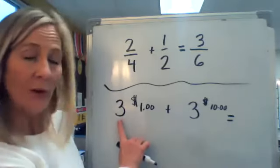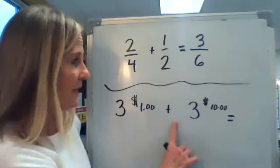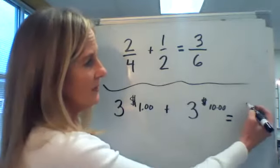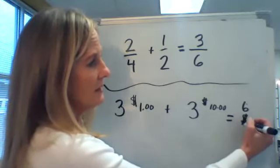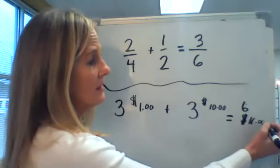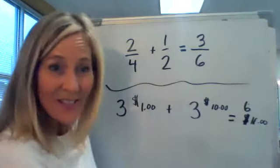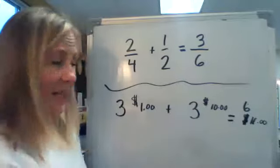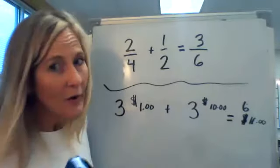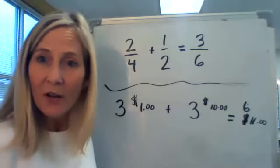So think about that. If we have three $1 bills plus three $10 bills, what would be the answer? Six $11 bills? No, there's not even an $11 bill. Doesn't make any sense. Now, I know you probably already know the answer, $33, right?